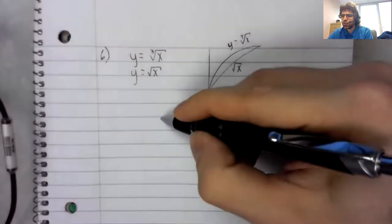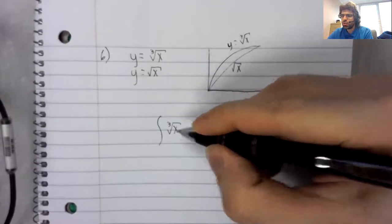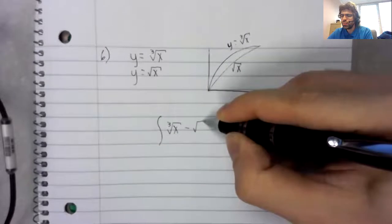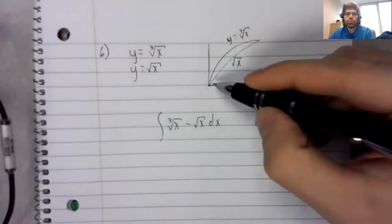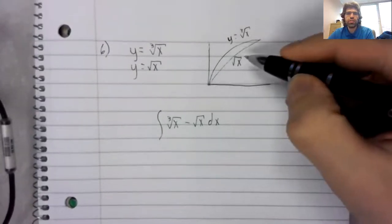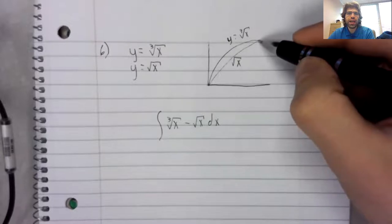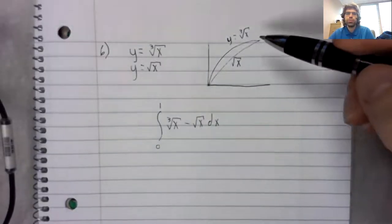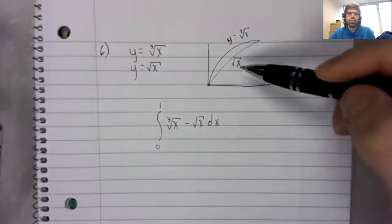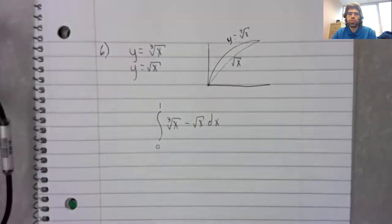Area is just the larger function minus the smaller function. You could use your calculator's intersect feature to find where this region begins and ends. Or maybe you can just figure in your head - the cube root of one is one, the square root of one is one. Likewise for zero, the cube root and square root of both is zero.